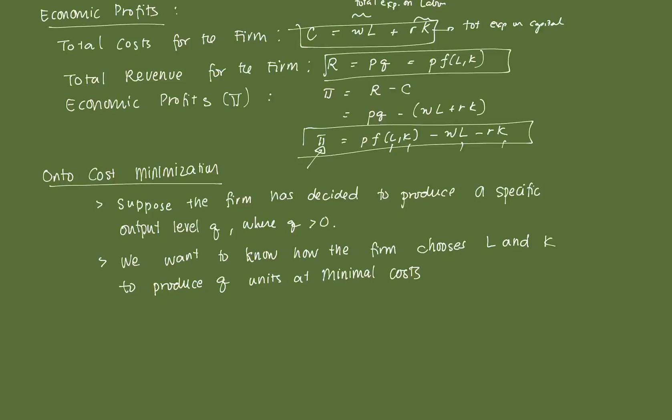For now, what we'll assume is that the firm has already chosen its desired output level, and it wants to minimize cost. What does that mean? Think of a firm, in this case, for cost minimization as they already have a sort of production target. And what they want to do is they want to be able to achieve that target, but they want to achieve that target at the lowest possible cost. So, suppose the firm, on to cost minimization here. Suppose the firm has decided to produce a specific output level Q. So, it has some sort of production target Q, where Q is positive.